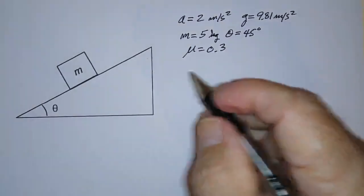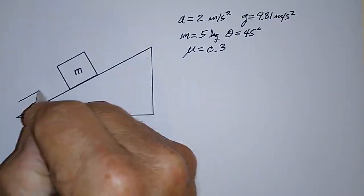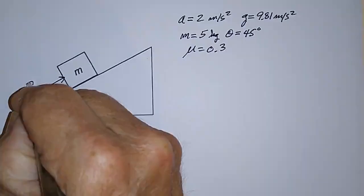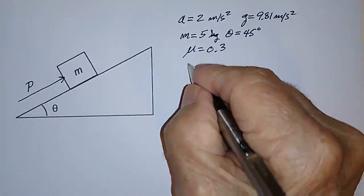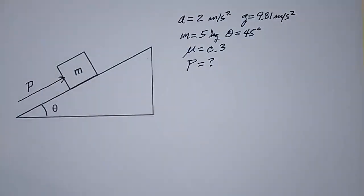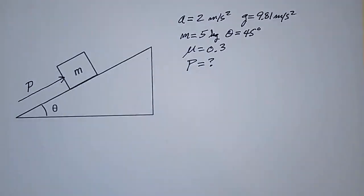And let's call the force that we exert parallel to the plane, like this, let's call that P for push. So P is equal to, well, that's what we want to find out. So how are we going to set this up? Let's look at the forces acting on the mass, and then apply Newton's second law.